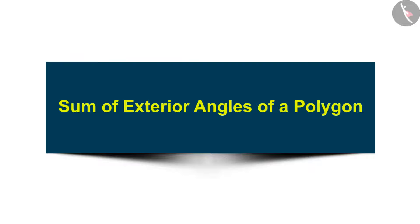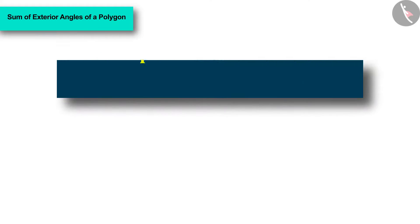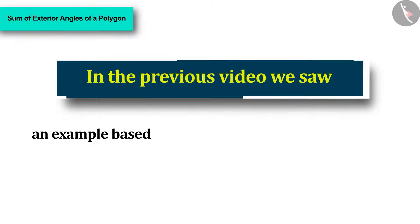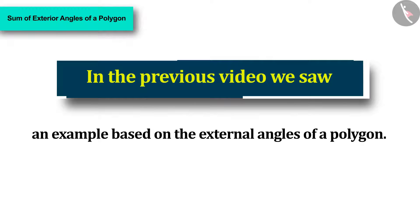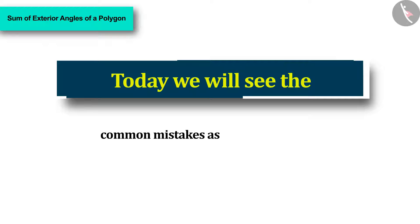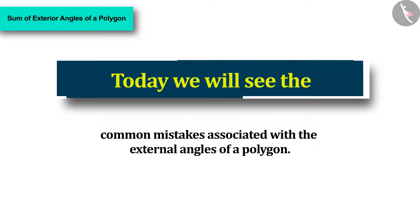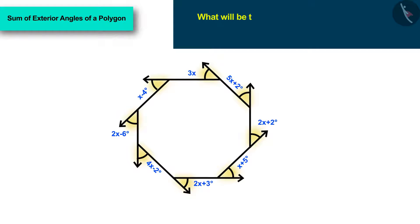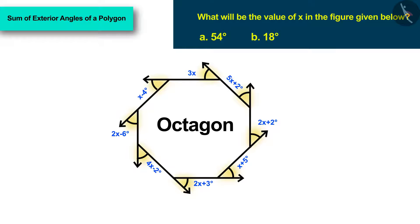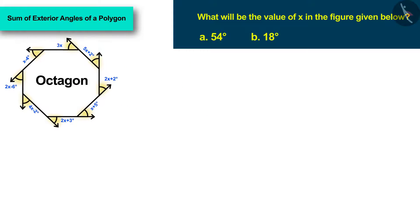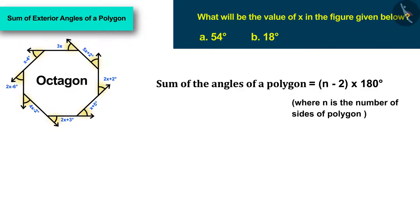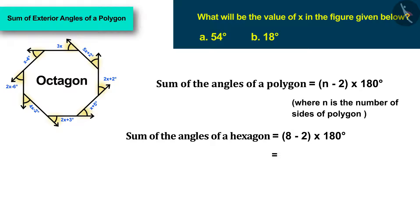Welcome to this video. Today we will see the common mistakes associated with the external angles of a polygon. What will be the value of x in the figure given? The figure has 8 sides, so it is an octagon. Some students see it is an octagon and use the interior angle sum formula to find the sum of interior angles as 1080 degrees.